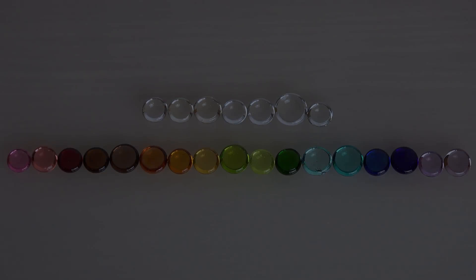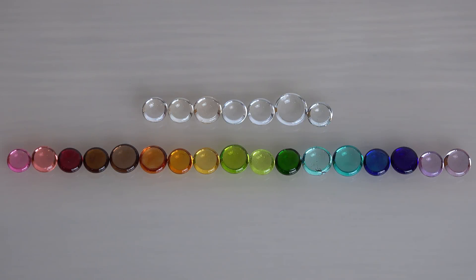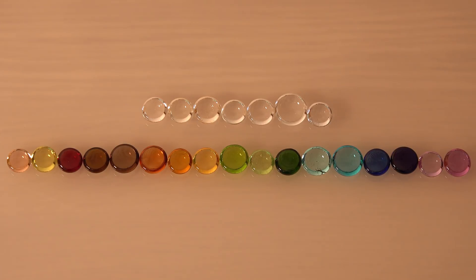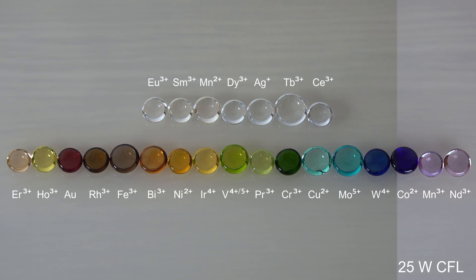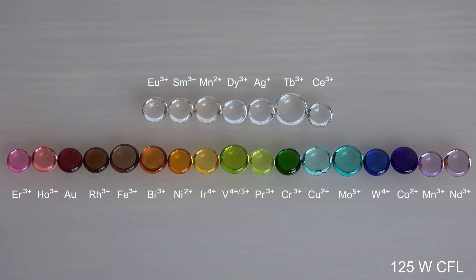With more normal light there are still some interesting changes. Here they are lighted with a compact fluorescent light. Notice the changes as I switch to LED light. And white balance the camera. The erbium and holmium suddenly look out of order. Let's examine the beads that change the most in a music montage.